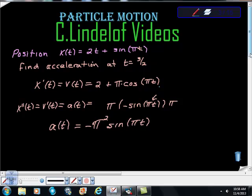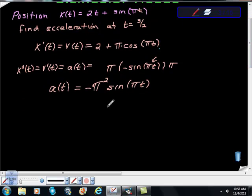From here, all I have to do is evaluate this. So I want a(3/2). That's negative π² times sin(π × 3/2), which is sin(3π/2). So far so good.